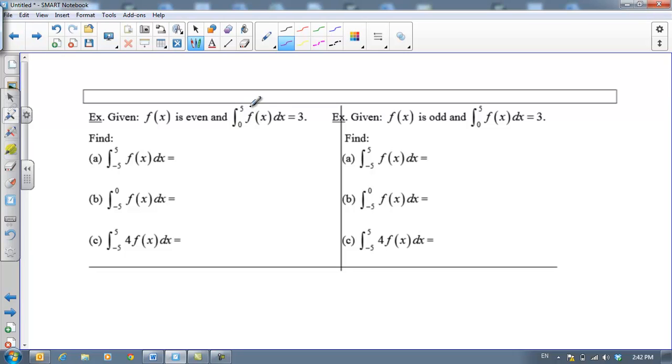Given f(x) is even, and we have the integral from 0 to 5 of f(x) equals 3, let's find these values. Since it's even, from -5 to 5, this is going to be twice the value from 0 to 5, so that's just going to be 2 times 3, or 6. And then from -5 to 0, if it's even, it's symmetric. So the area from -5 to 0 is the same as the area from 0 to 5, so that's going to be 3. And then this is something we already know. The 4 can come out in front, and we can just take 4 times our answer that we got in a. So 4 times 6 is 24. So there's some examples of an even function.